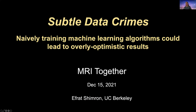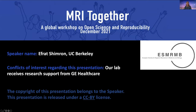All right, can you see it? All right, thank you. So I'm very happy to be here, and today I will talk about our research on subtle data crimes, which shows when naively training machine learning algorithms could lead to overly optimistic results.